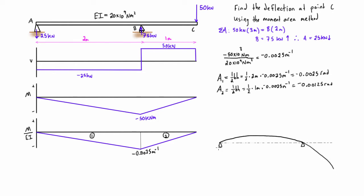Let's label the points: this is point A, this is point B, and this is point C on the undeflected structure. If we draw a tangent line at point B, we can compare it to the tangents at A and at C. The tangential deviation of the tangent line at C with respect to B is this measurement — TC with respect to B — and this measurement is TA with respect to B.